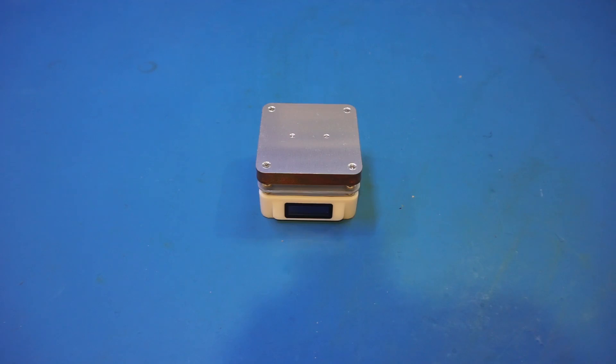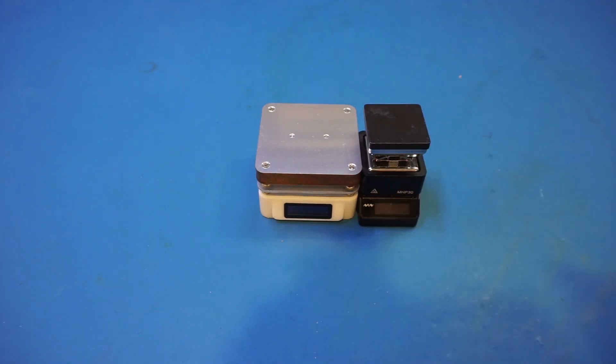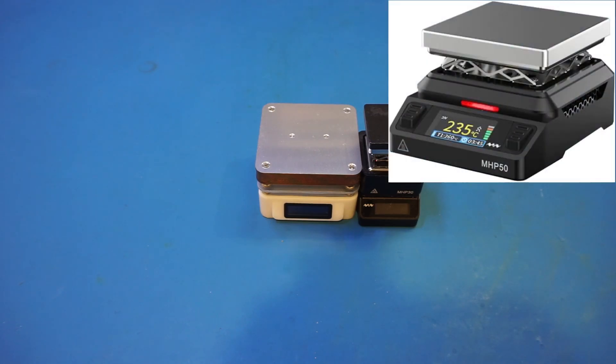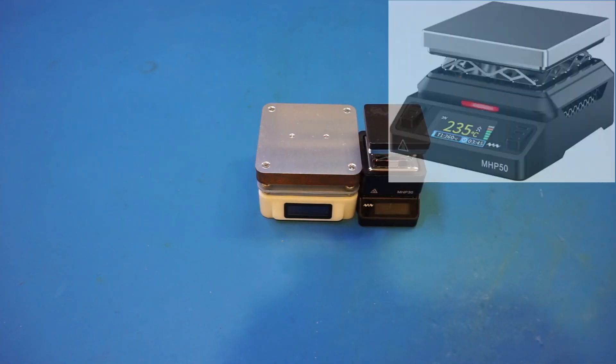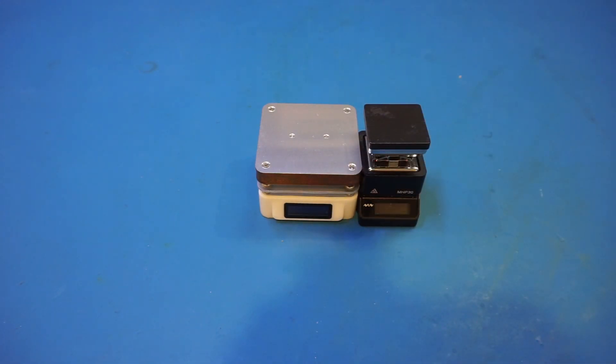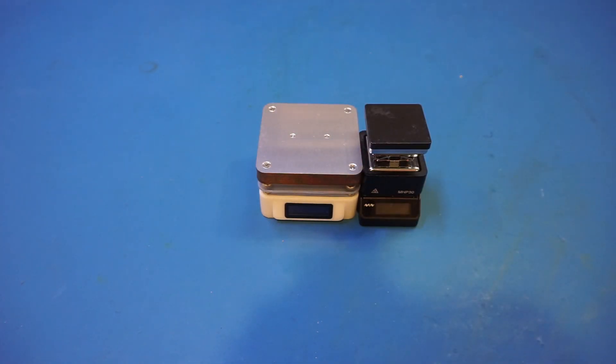On this channel, I had reviewed a hot plate before, and that one is the MHP30 from MiniWare, as you can see here. Of course, MiniWare now has a larger version, the MHP50, which is almost the same size as the T55, but it costs more than twice as the T55 we have here. And the T55 is actually even larger than the MHP50, because its surface area is 55 by 55 millimeters versus 50 by 50 of the MHP50.